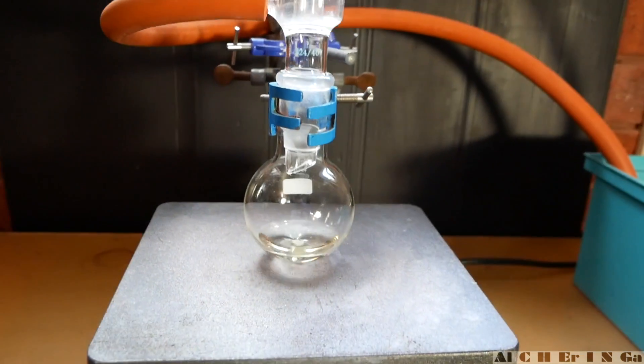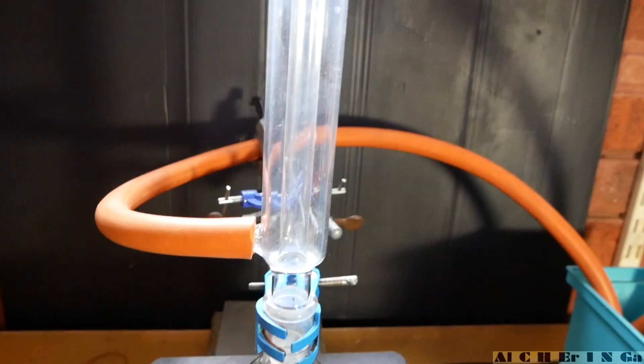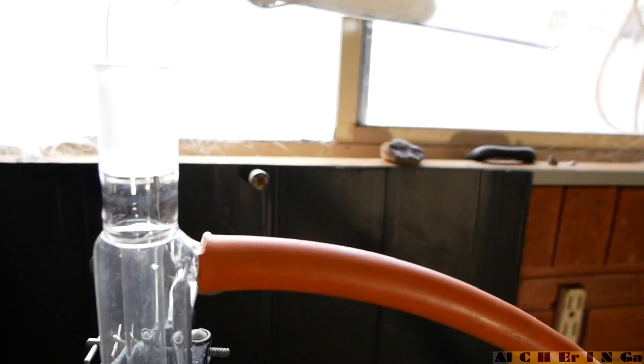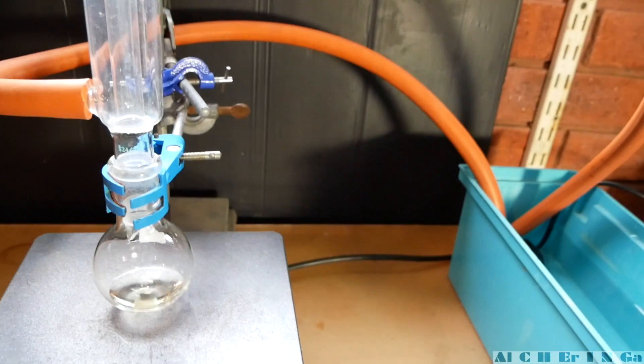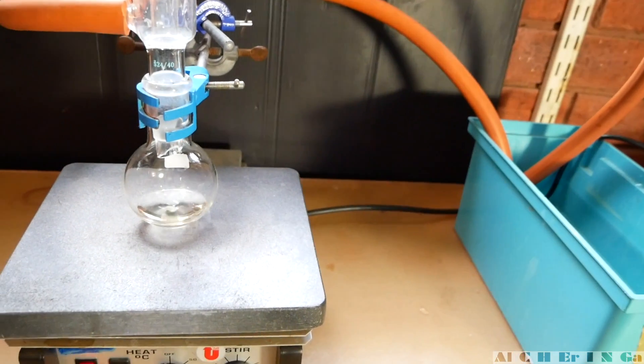After all of the reagents have been added, attach a Liebig condenser to the round bottom flask and attach a calcium chloride drying tube to the end of it. Connect a cold water pump to the condenser. Don't forget to turn the water pump on.